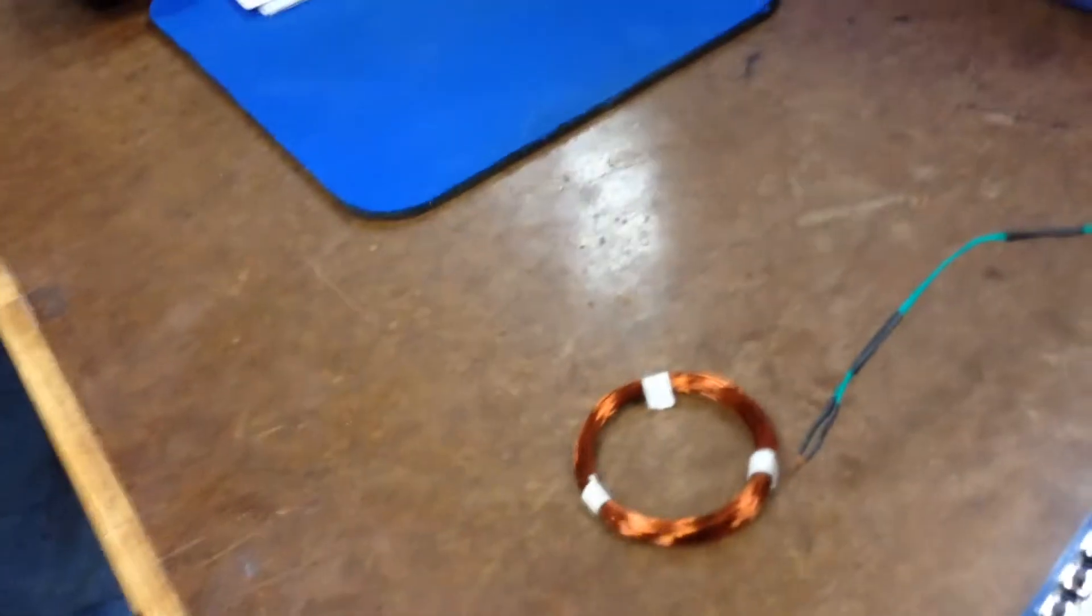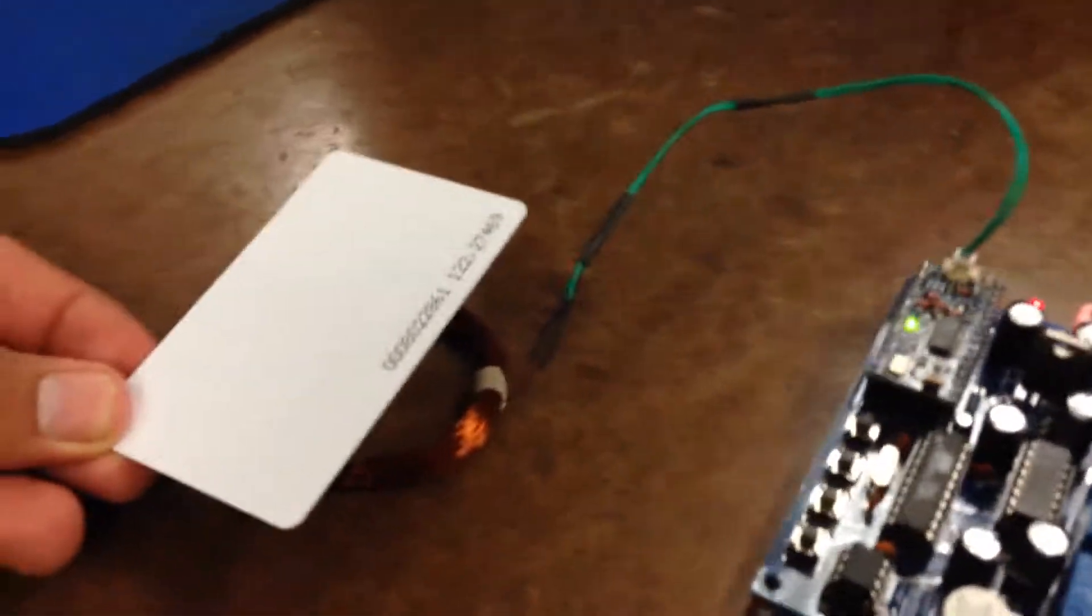And then right here we have Jose holding the RFID tag car. We can see the turbo coming out of the circuit.